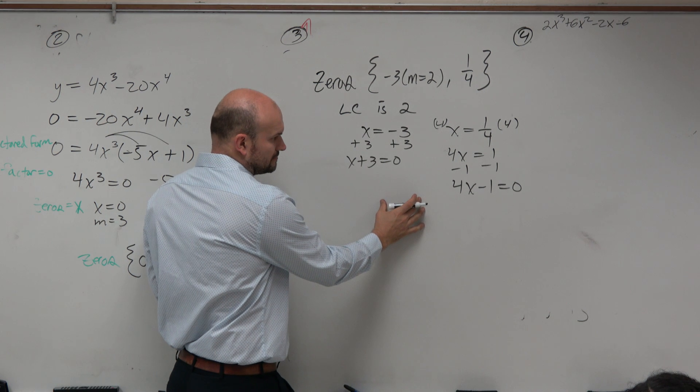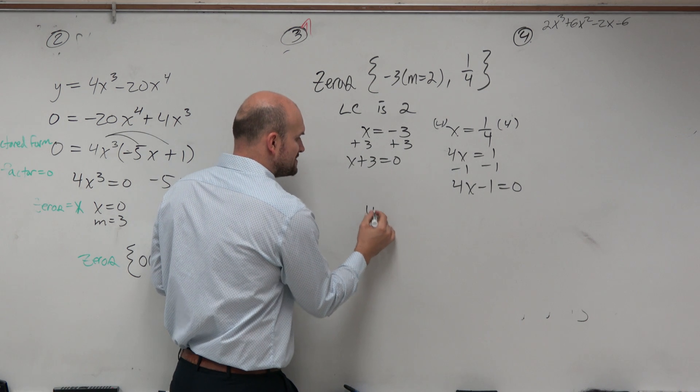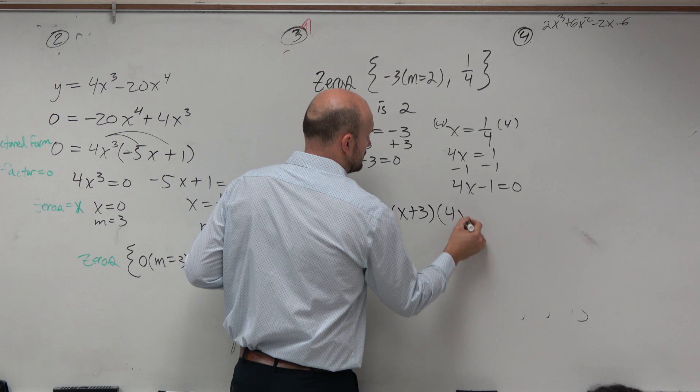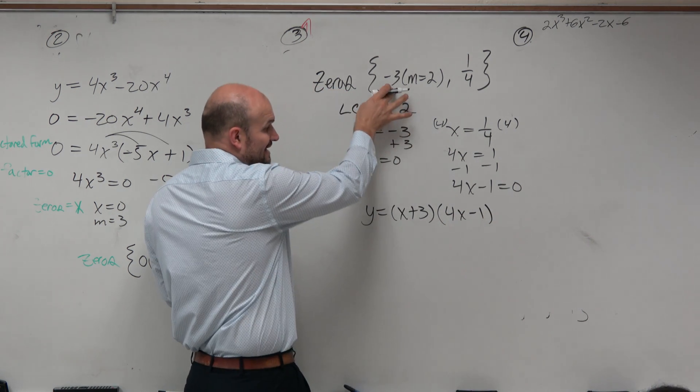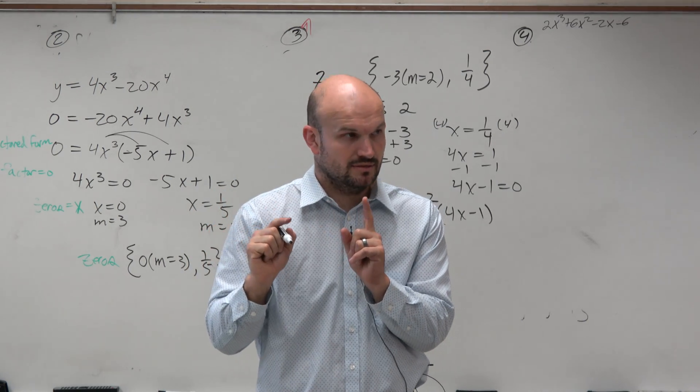So now these are your two factors. And now we can multiply them to provide us with the polynomial. But again, this has a multiplicity of 2. So we've got to make sure we raise that.